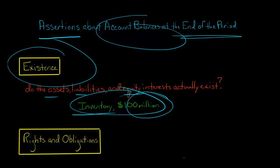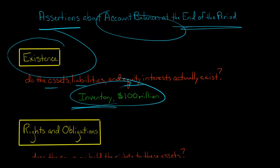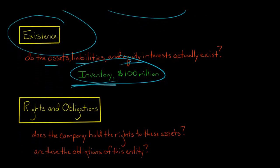It has an ending balance of $100 million. But your job as the auditor is to verify, okay, is there even any inventory in existence? Does that inventory actually exist? Or is this just fictitious?